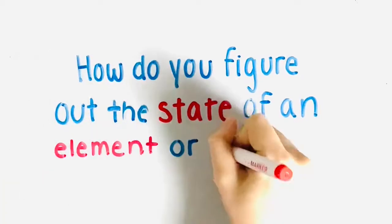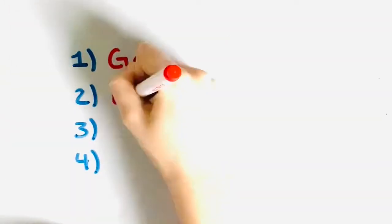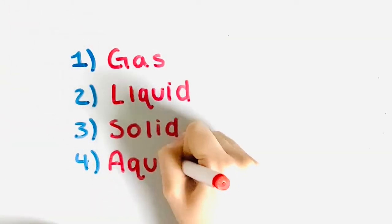How do you figure out the state of an element or compound? We need to know the states of elements and compounds because we need to identify their states in reactions. There are four main states: gas, liquid, solid, and aqueous.